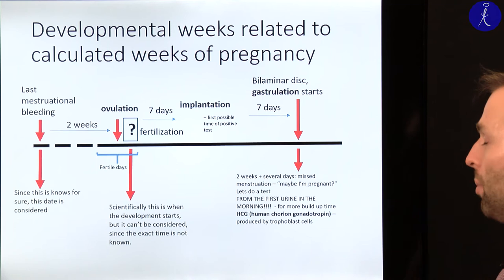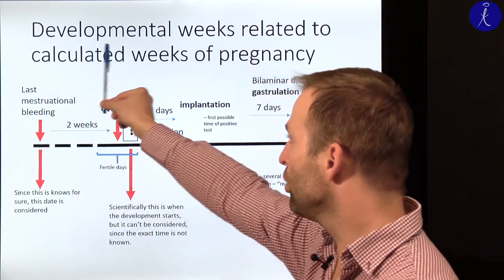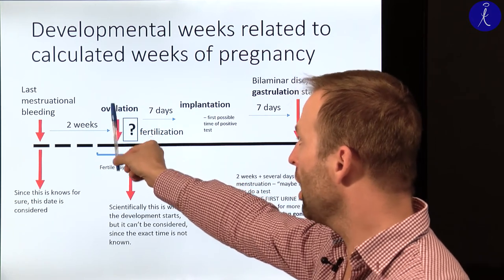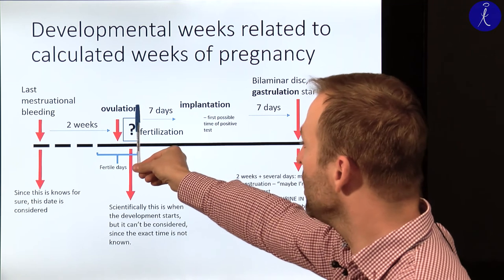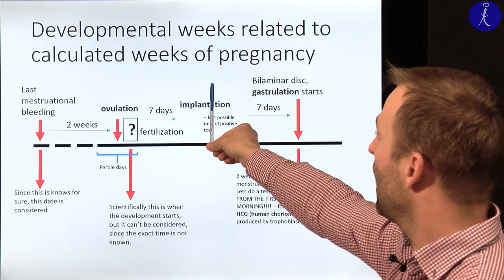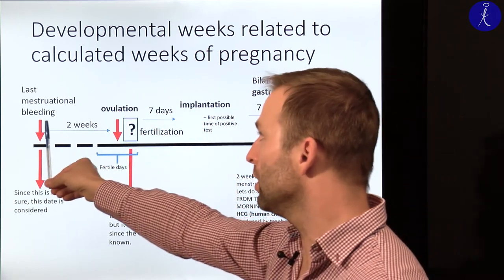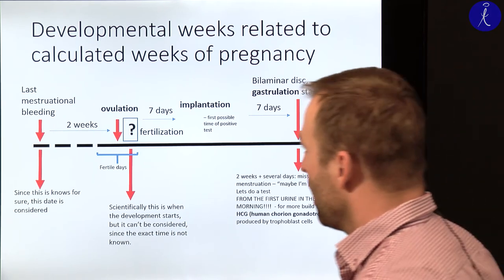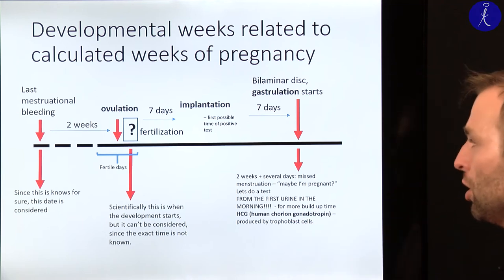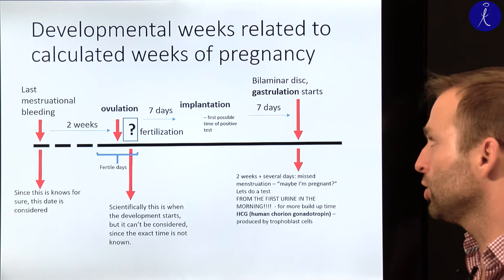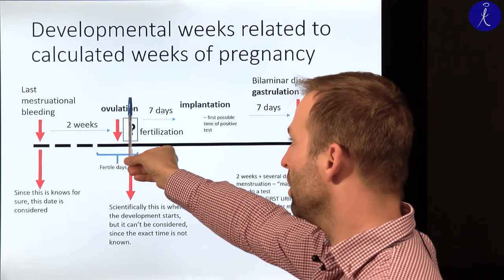Looking at the monthly cycle: this is the time of the last menstrual bleeding. Two weeks after the menstrual bleeding, ovulation happens. After ovulation you have the chance of fertilization. Approximately one week after fertilization the implantation will happen. This means implantation can happen at earliest approximately three weeks after the last menstrual bleeding.